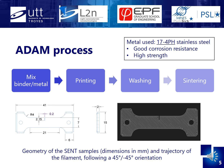Then the mix is deposited layer by layer to create the part. Then the washing step is when the printed part is submerged in a solvent in order to remove the majority of the binder. After that, it is put in an oven near the melting temperature of the metal in order to fuse the powder and to evacuate the binder's remains. This is the sintering step. On the left, you can see the geometry of the printed samples with the notch in the middle of the specimen, and on the right, the trajectory of the nozzle during the printing process.